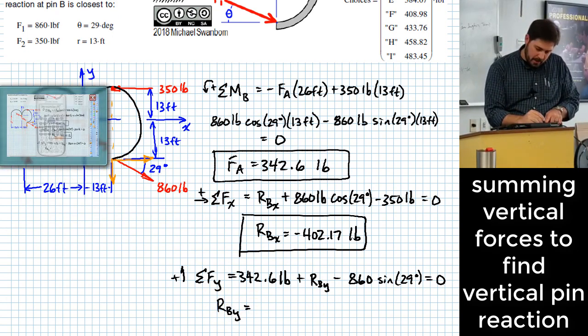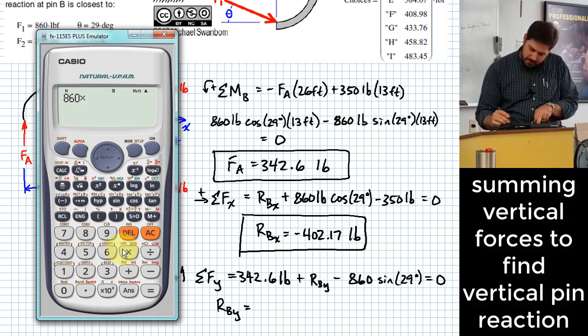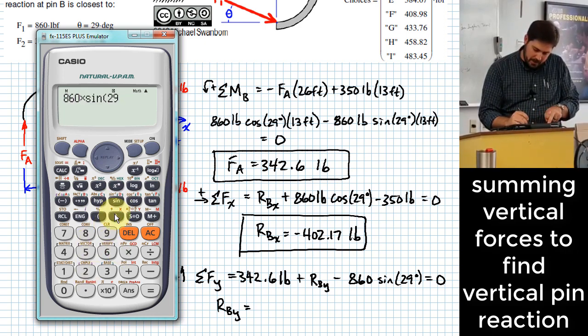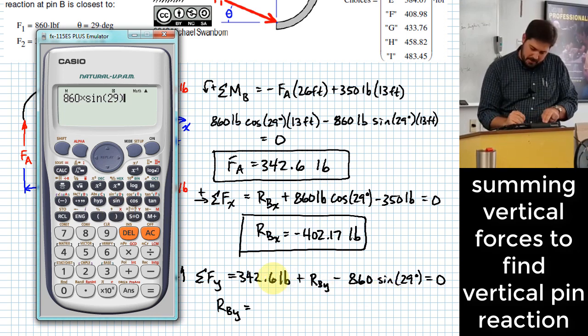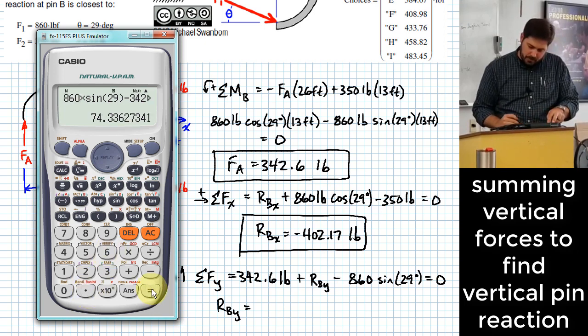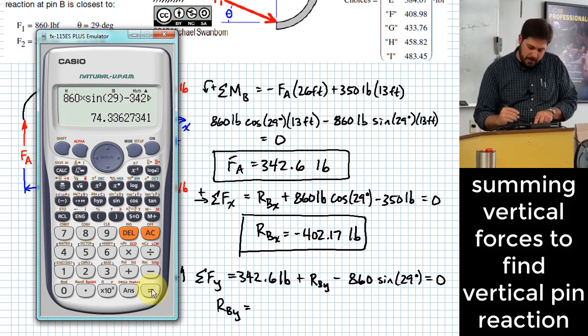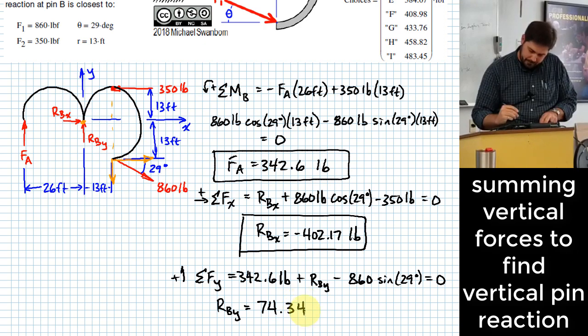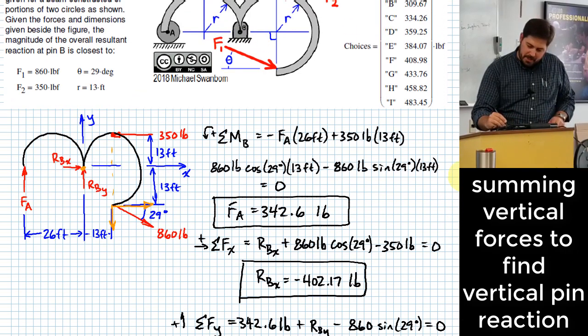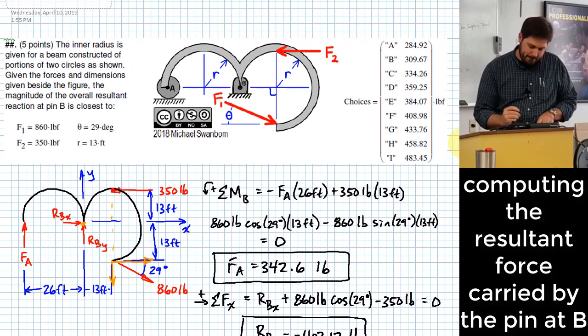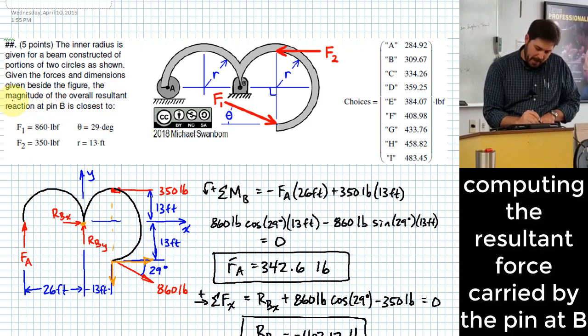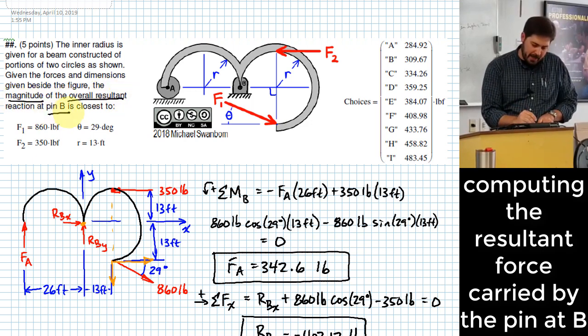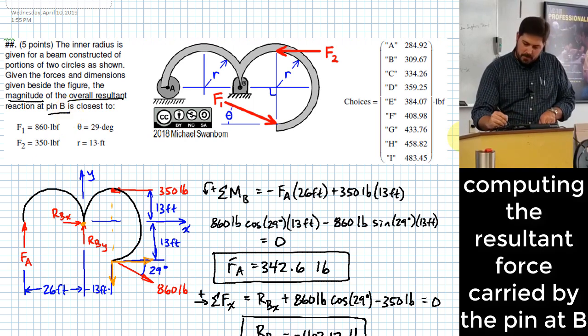It looks like what RBY will be is 860 times the sine of 29 degrees minus 342.6, which would give me 74.336. But what did the question actually ask for? It wants the magnitude of the overall resultant reaction at B, right? So how do I get that?